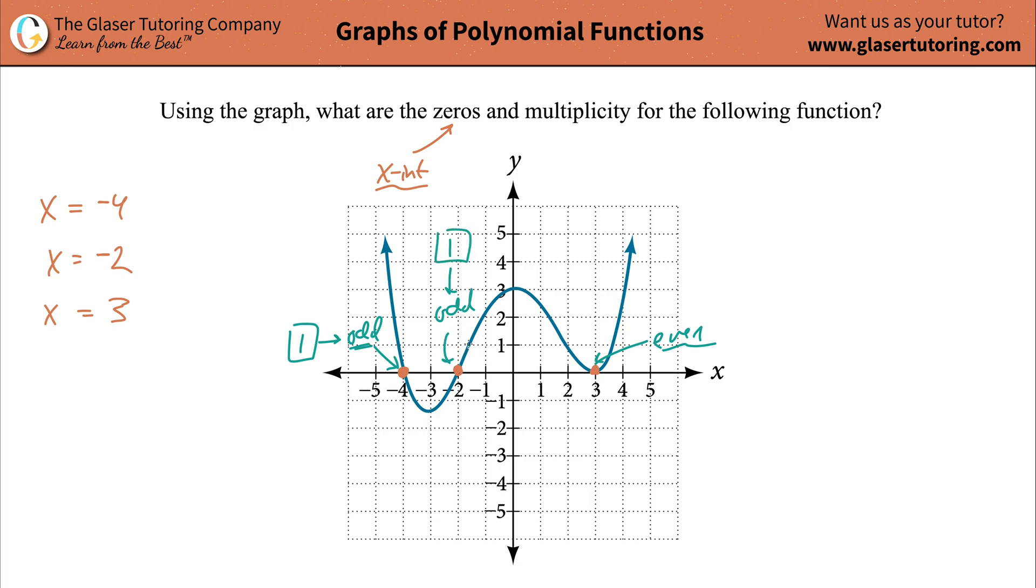So here though, both of these cross, they don't kind of snake and therefore have a multiplicity of one. So each of these zeros would have a multiplicity of one.